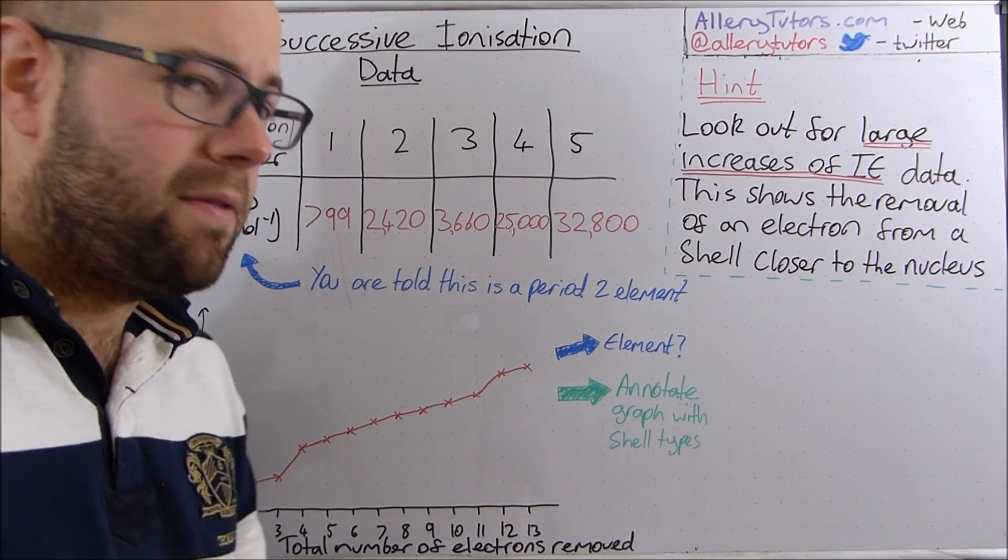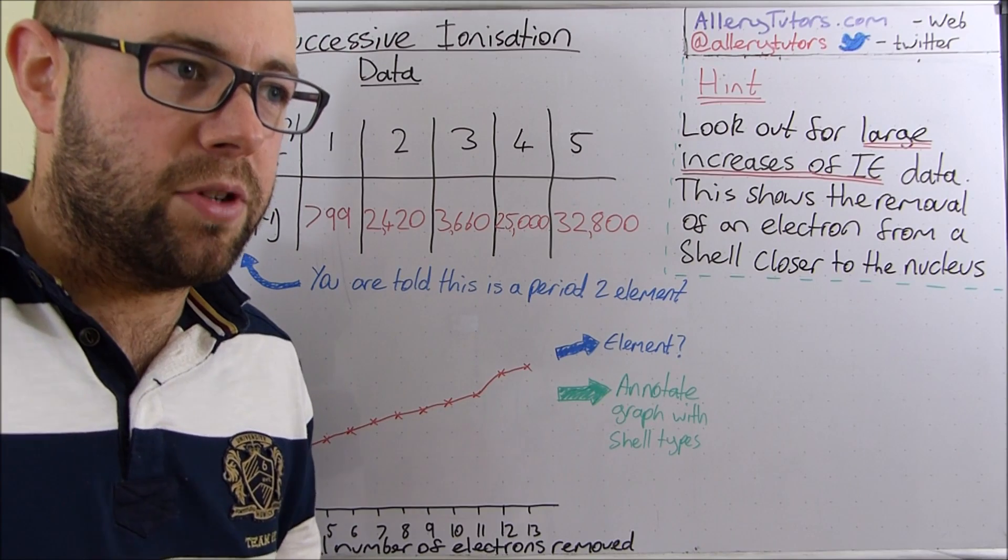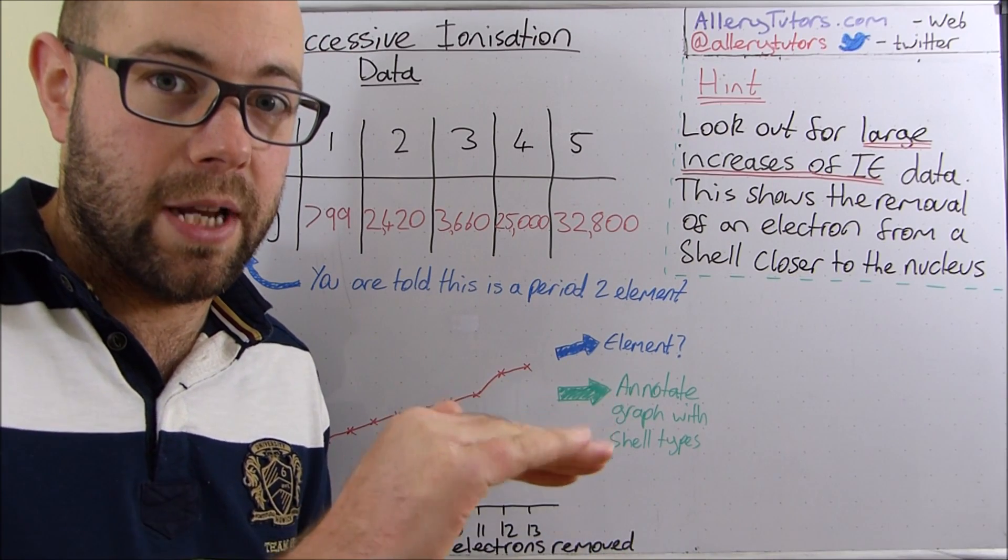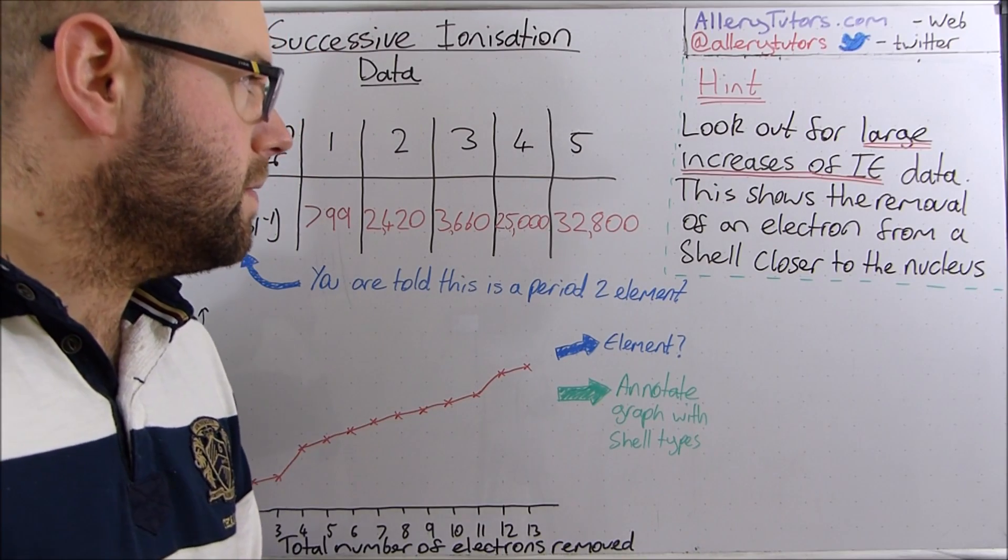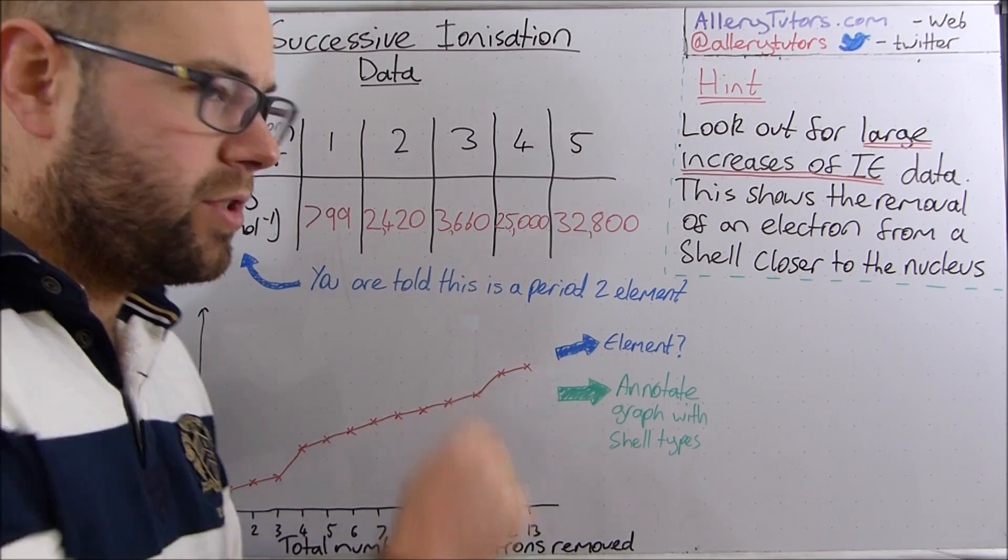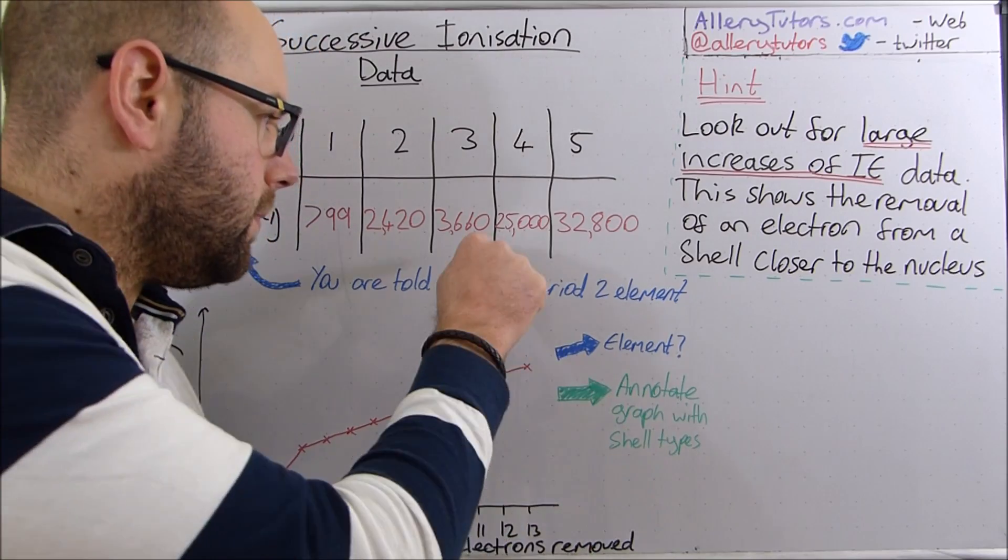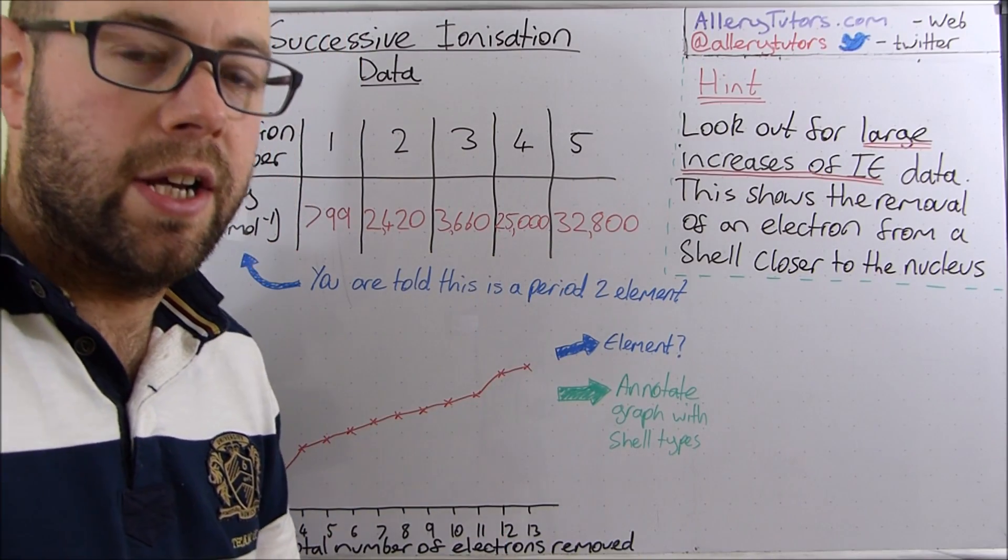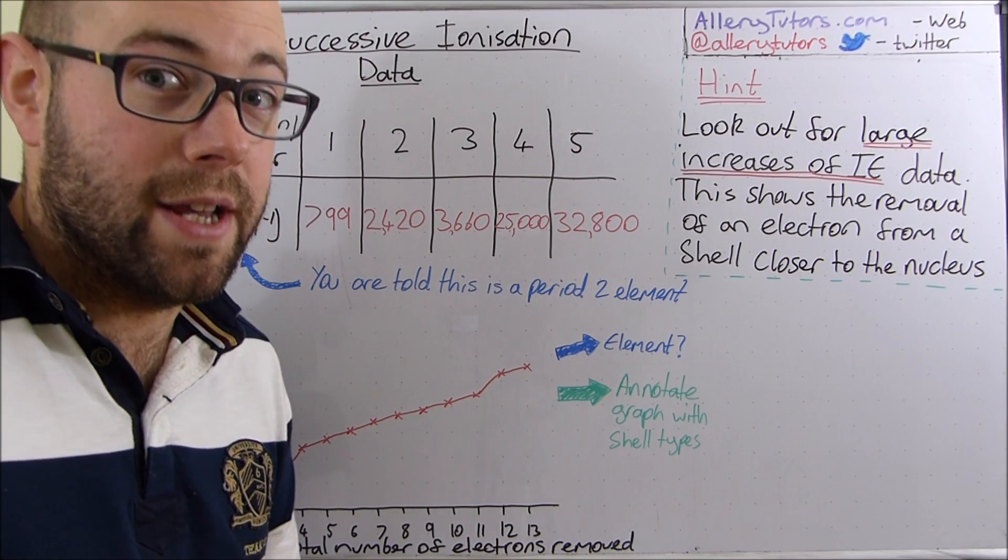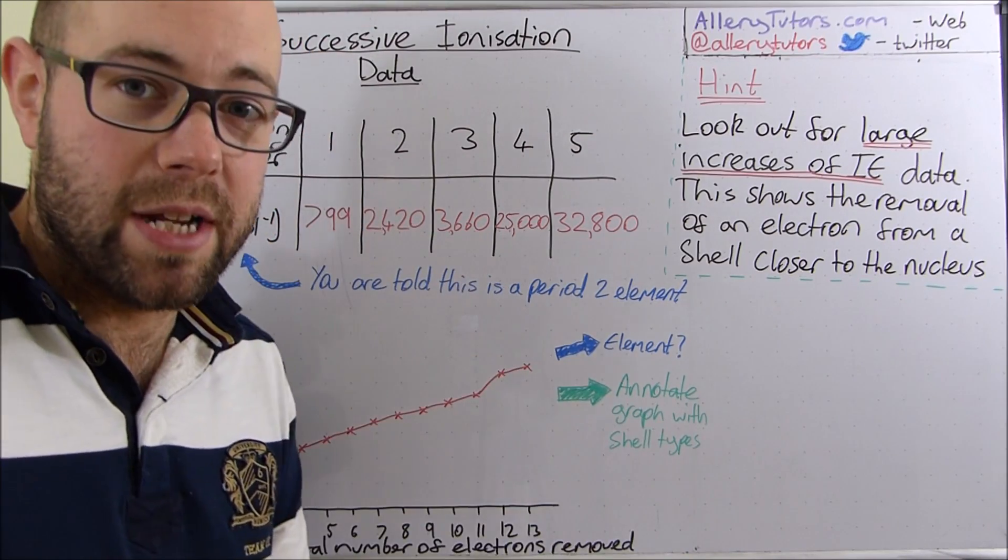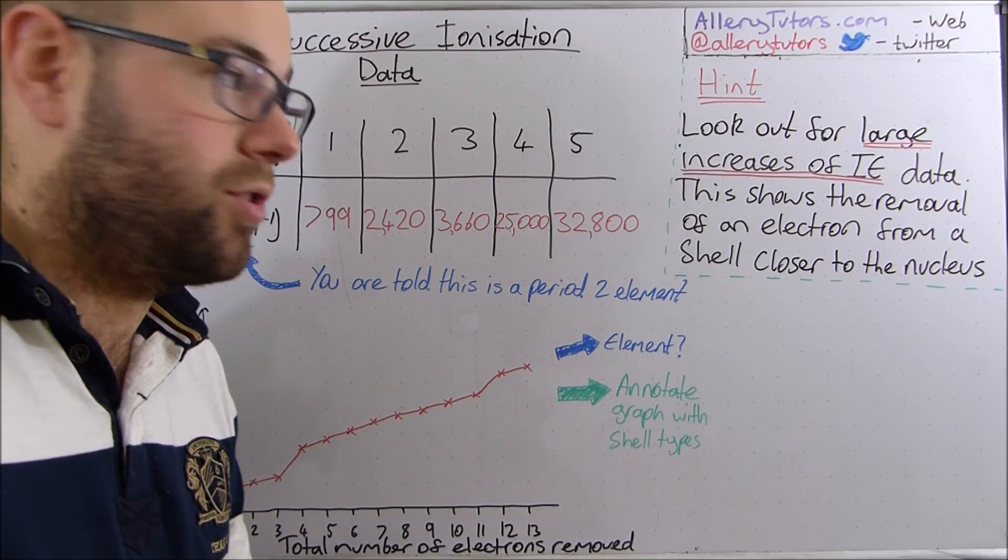we've been told that it's a period 2 element, so all we have to do is look along our periodic table, find period 2, which is the second row down, and we're looking for an element with three electrons in an outer shell and the fourth one is in a shell closer. If you look carefully on your periodic table, you should find that boron is the element that this data represents because it has three electrons in its outer shell.